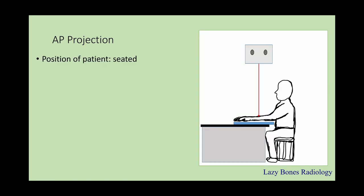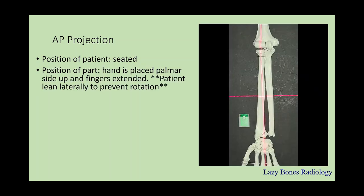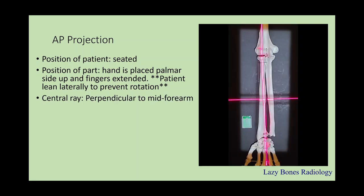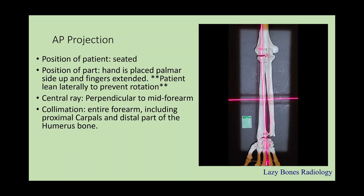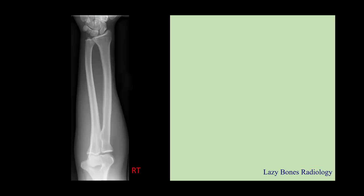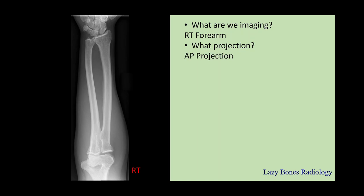AP projection. The patient is seated. Position of the part: the hand is placed palm or side up, fingers are extended, and the patient is leaning laterally to prevent any rotation. Central ray is perpendicular to mid forearm. Make sure to collimate the entire forearm including the proximal carpal bones and the distal part of the humerus. SID is 40 inches; remember to label correctly. Now let's practice: What are we imaging? This is the right forearm. What is the projection? AP projection. What is the position? Hand is supinated, or anatomical position.